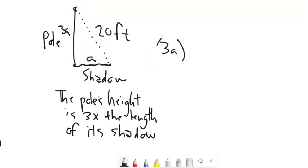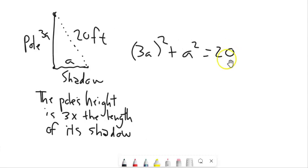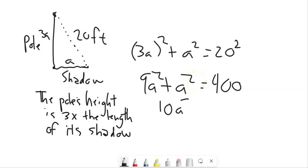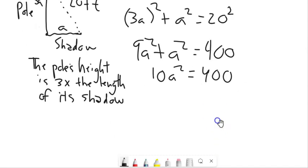And then now, well, this is a right triangle. I can use Pythagorean Theorem for this. I can say 3A squared plus A squared is 20 squared. And let's go ahead and solve this out. 3A squared is 9A squared plus A squared. 20 squared is 400. Feeling good. Add these together. I get 10A squared is 400. And then from here, divide both sides by 10. A squared equals 40.